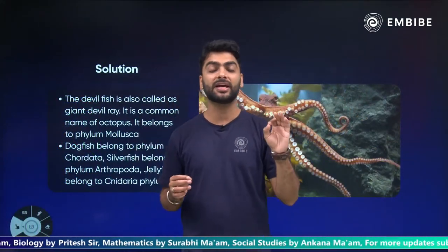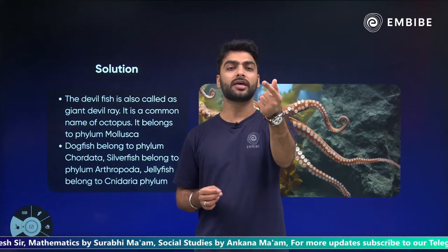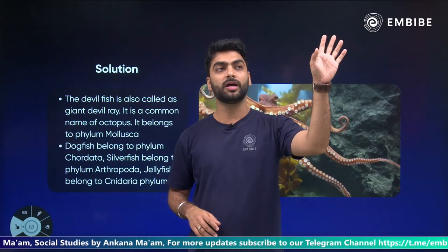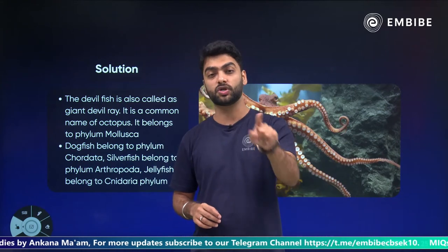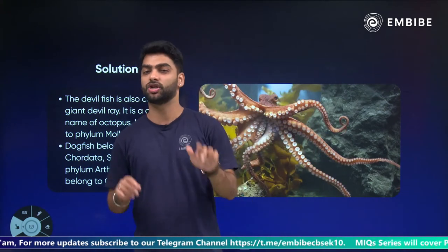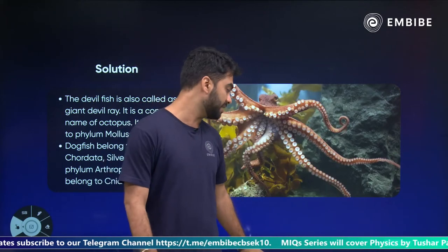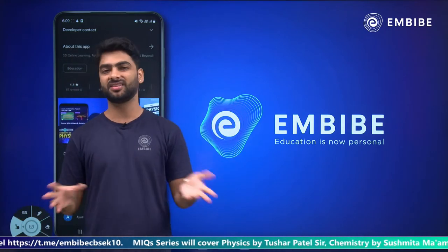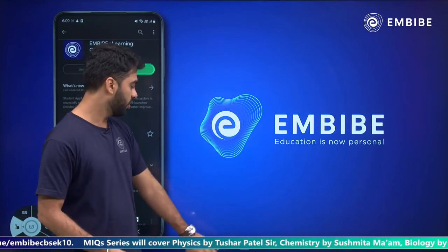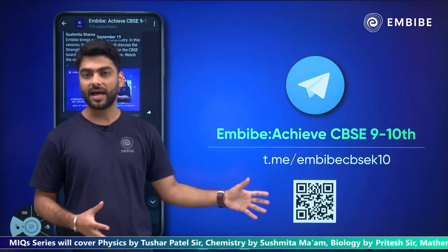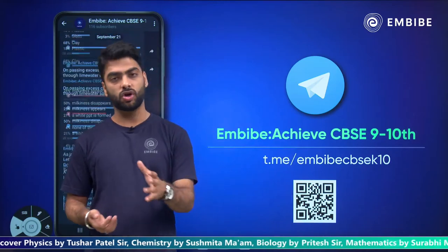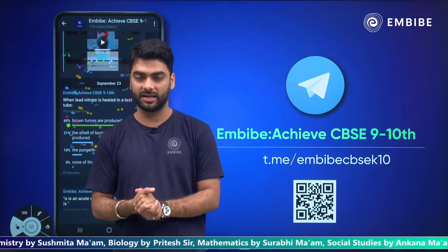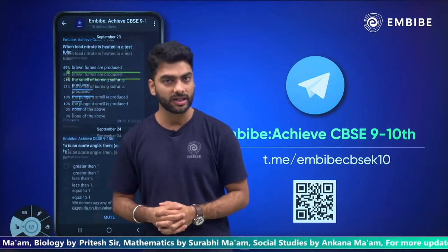I'll do a one-shot class jis mein hum saare 5 kingdoms karenge — unke characteristics, unke under ki classifications, unki naming, aur unke examples. Plus us class ki sabse badi highlight hogi ki main aapko aisa tips dunga, aisa tricks dunga ki aapko koi do baje bhi utha ke puche — 'bata, Monera ke examples kya hain?' — aap bol doge: bacteria, blue-green algae. So I'll teach you that — that is my guarantee. Tell me in the comment section.